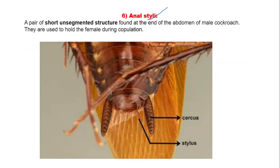Anal styli: a pair of anal styli are found in male cockroach. These are short, unsegmented structures found at the base of the abdomen of the male cockroach, and these anal styli are used to hold the female during copulation.